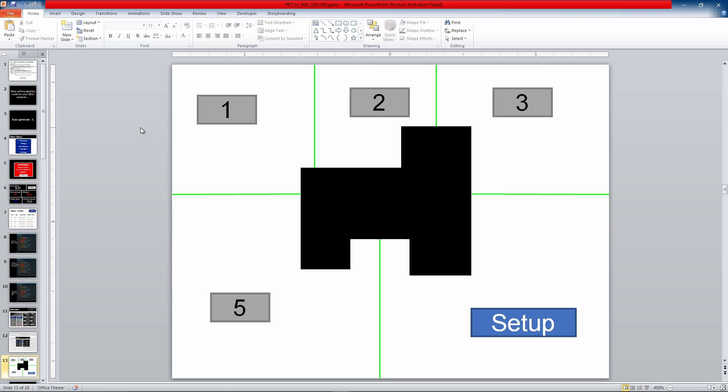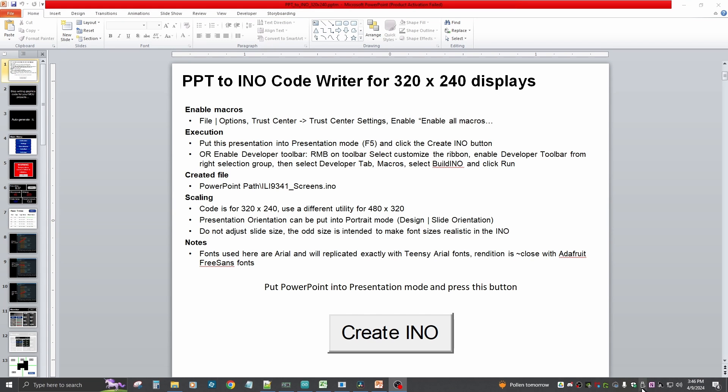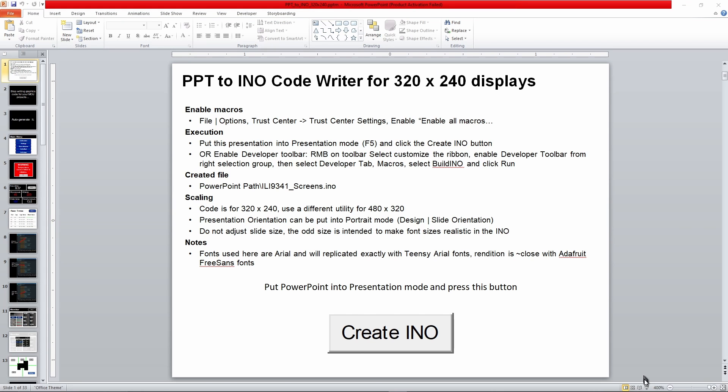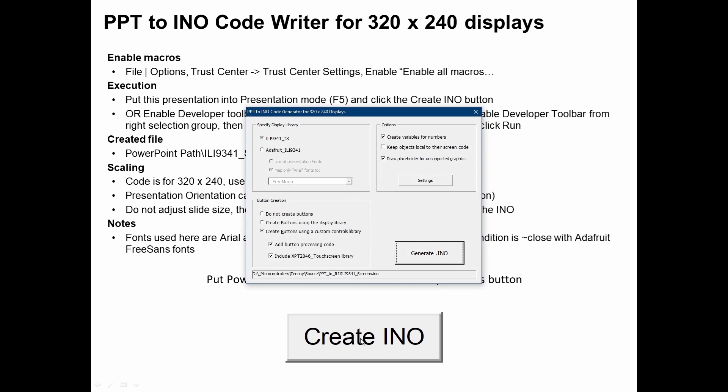Now, all you need to do is go to the first slide, go to presentation mode, and click the Create INO button.